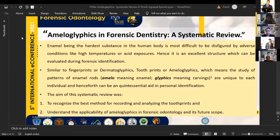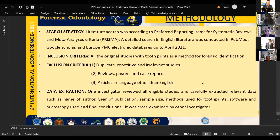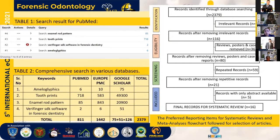Coming to the methodology, the literature search was done according to the Preferred Reporting Items for Systematic Reviews and Meta-Analyses criteria — PRISMA — and a detailed search in the English language was conducted in PubMed, Google Scholar, and Europe PMC electronic databases up to April 2021. All original studies with tooth prints as a method of forensic identification were included, and duplicate, repetitive, or irrelevant studies, along with reviews, posters, and case reports, were excluded. Articles in languages other than English were excluded. One investigator reviewed all eligible studies and carefully extracted the reliable data, which was cross-examined by another investigator. Advanced search was done in PubMed, as seen in Table 1, with keywords: ameloglyphics, enamel rod patterns, tooth prints, and VeriFinger SDK software in forensic dentistry.